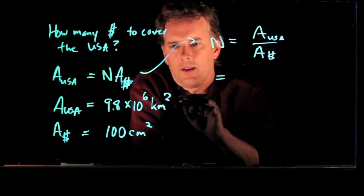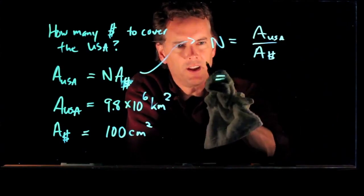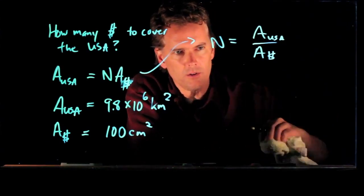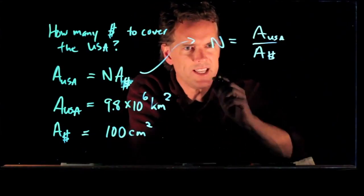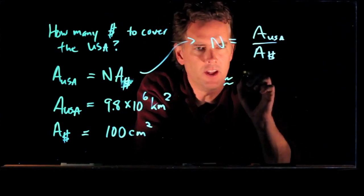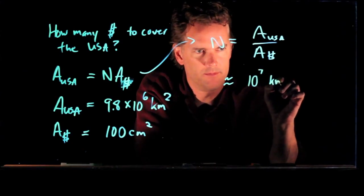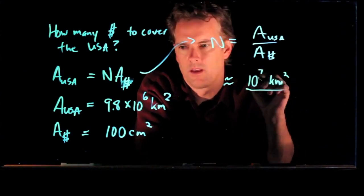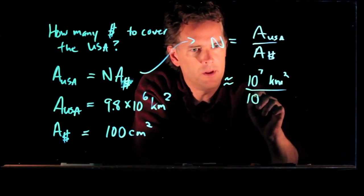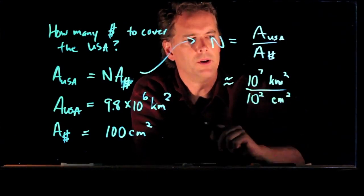Now, we can approximate this, okay? 9.8 times 10 to the 6, that is pretty close to 10 times 10 to the 6. 10 times 10 to the 6 is 10 to the 7. 100 square centimeters down in the bottom, that is 10 to the 2 square centimeters.